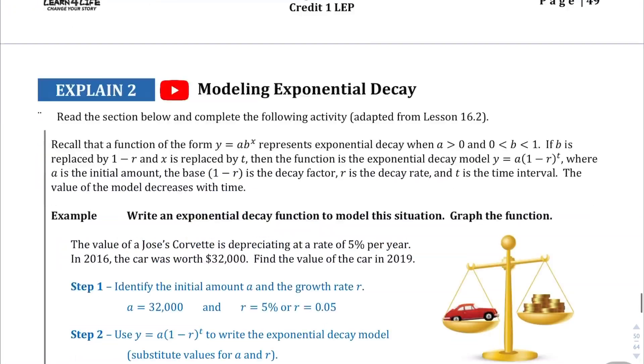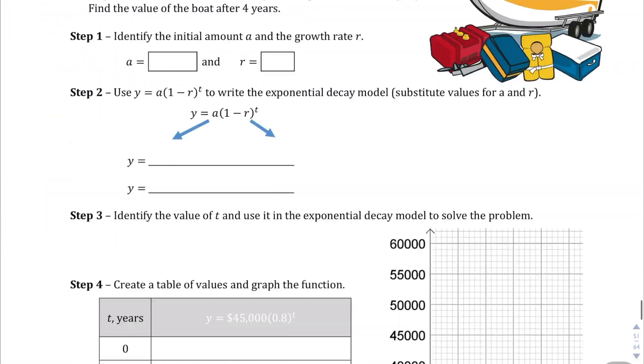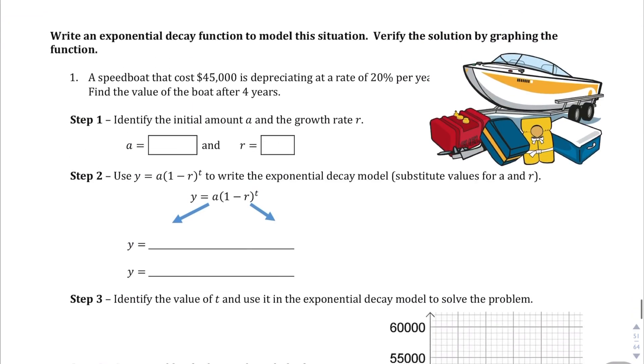Let's jump to the next page. We're going to go to page 51 now. Let me zoom out here. And I will let you read the explain to section on your own. And the only thing that's different about this one is it's an exponential decay function here. So everything else is the same. Here's the initial value. Let's read the context first. Speedboat that costs $45,000 is depreciating or going down in cost at a rate of 20% per year.